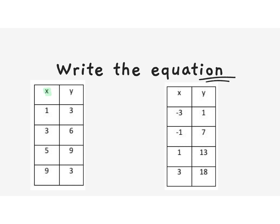We have our x and our y. Our change in x as we go through this entire table is plus 2 as we head down. Our change in y as we go down the table is plus 3. Since the change is consistent throughout...